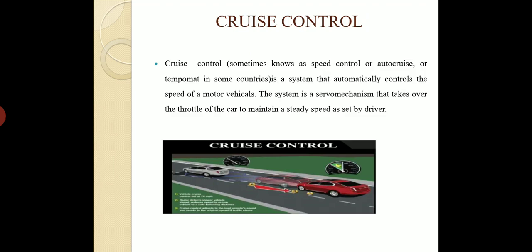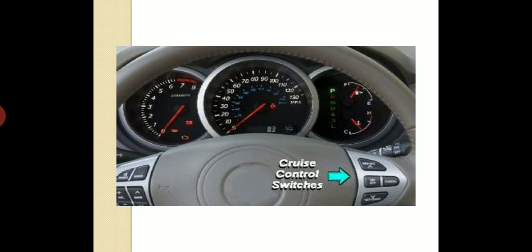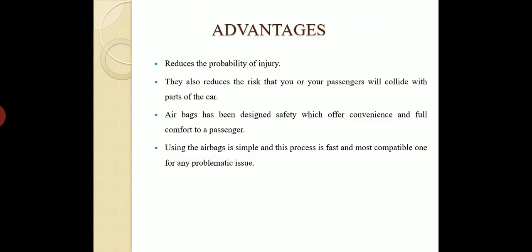Cruise control system. Its function is controlling the speed automatically. Cruise control, also called auto cruise, is a system that automatically controls the speed of a motor vehicle. This system uses a servo mechanism that takes over the throttle of the car to maintain a steady speed as set by the driver. That is called cruise control, shown in the figure with the button.